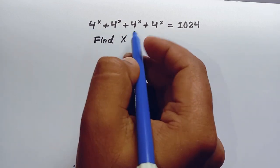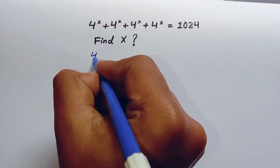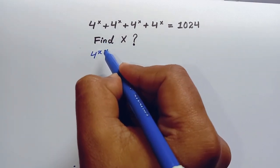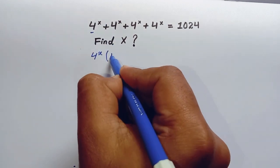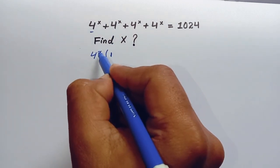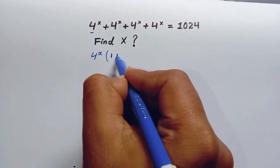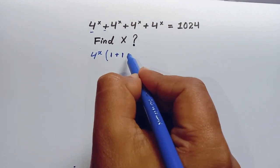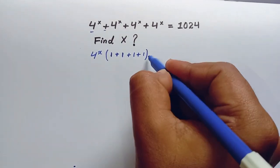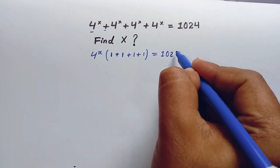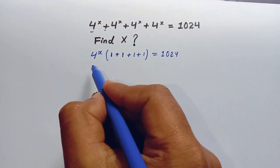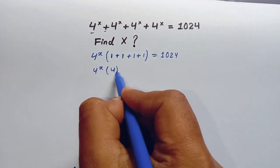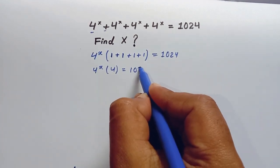From this equation we can take 4 to the power x as common. When we take 4 to the power x as common, what remains is 1 plus 1 plus 1 plus 1, since 4 to the power x times 1 is 4 to the power x. So this equals 1024, and when we add those ones we get 4. So 4 to the power x times 4 equals 1024.